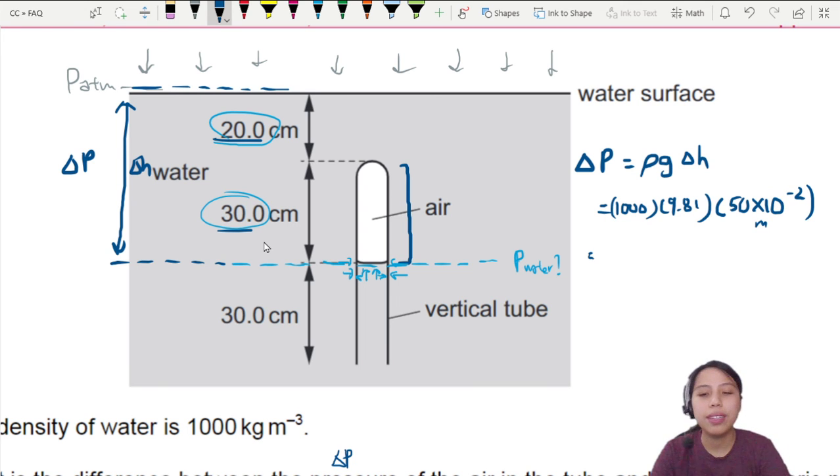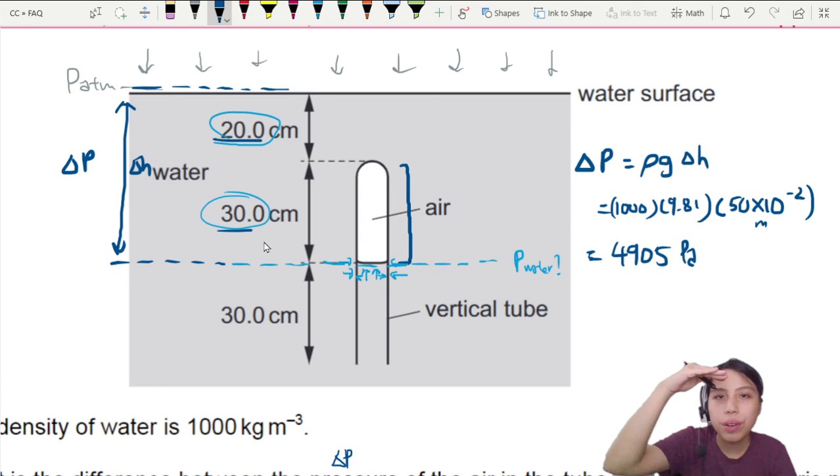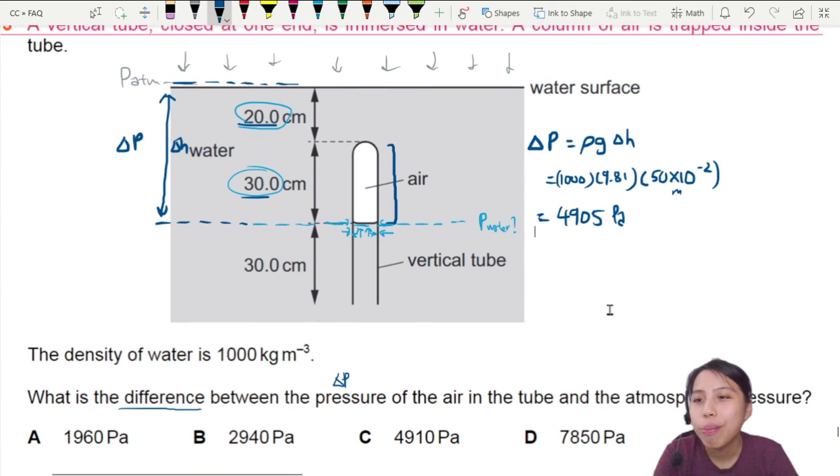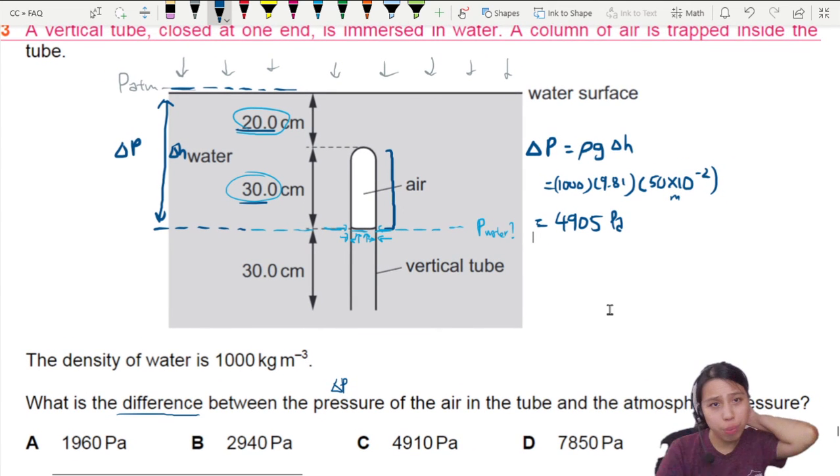What do we get if we press the calculator here? We get 4905, 4905. This is in Pascal, and it's the difference from atmosphere to air. So we are not including atmospheric pressure inside here because we are just looking for a difference in pressure. So the best choice here, if you want to find a difference, would be to choose 4905 over here.